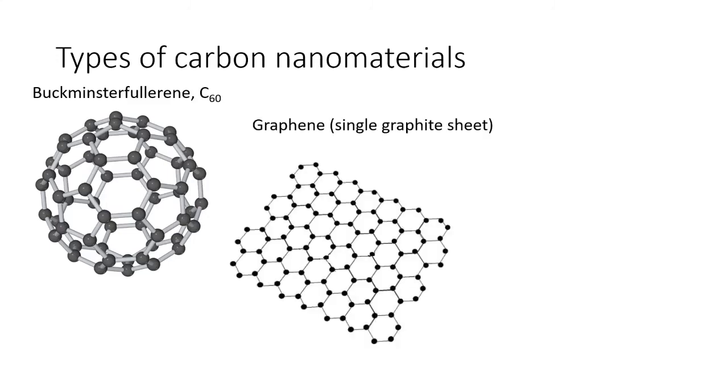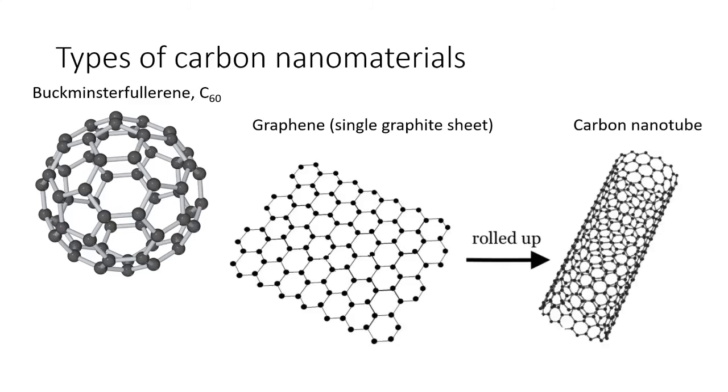A single sheet of graphite is called graphene, and it has incredibly high electrical conductivity due to its delocalized electrons. When graphene is rolled into a tube, it forms a carbon nanotube.